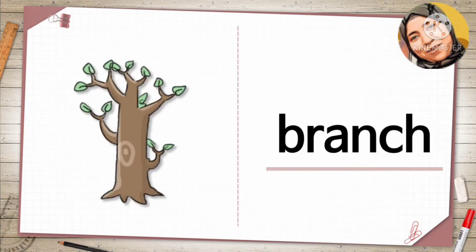This is a tree. The large part is the trunk. The trunk is thick. The small parts are branches. The branches grow from the trunk, and leaves grow on the branches.